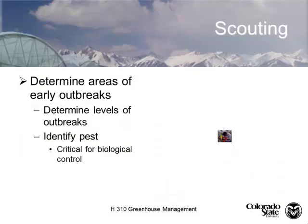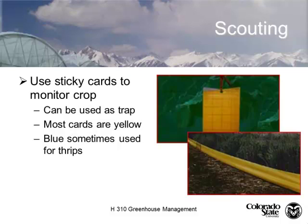Scouting refers to looking at the plants. The best scout is the person on the end of the water hose — that's why you don't want to put your most inexperienced, unskilled grower on the water hose. You want someone who knows how to look at plants, determine levels of outbreak, and identify the pest if you're going to use some kind of environmental control. We use sticky cards. Some people think of them as a trap, but they're not an effective management tool. I've walked into greenhouses where the cards are black with insects — that's a waste of time. Use the sticky card to monitor what's going on, to monitor your outbreaks, and to see what kinds of insects are present.